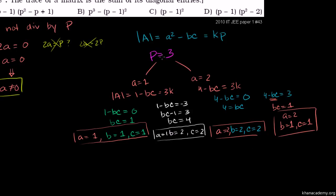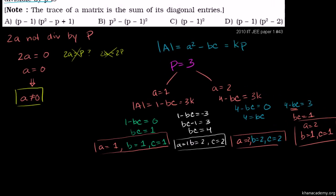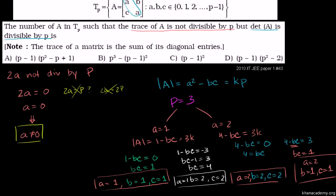Now let's check which answer choice evaluates to 4 when P equals 3. Computing the options: P minus 1 gives 2; P squared minus P plus 1 gives 7, so 2 times 7 is 14 — not 4. Another gives 23 — not 4. P minus 1 squared gives 2 squared, which evaluates to 4. So answer C looks right. Checking the last option also gives 14. So the answer is C, confirming the exam writers view negative 3 as divisible by 3, which it clearly is.